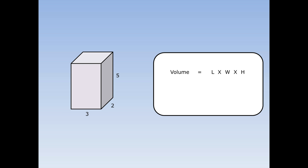To find the volume of this cuboid, first I write out the formula: the volume of a cuboid is length times width times height. Then I fill in the numbers. The length is two, the width is three, and the height is five. Two times three times five is thirty, so the volume of this cuboid is thirty centimetres cubed.